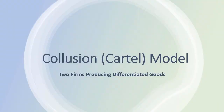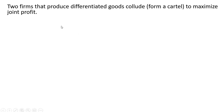In this video we're going to look at two firms engaged in collusion that are producing differentiated goods. Two firms that produce differentiated goods collude or form a cartel to maximize joint profit.